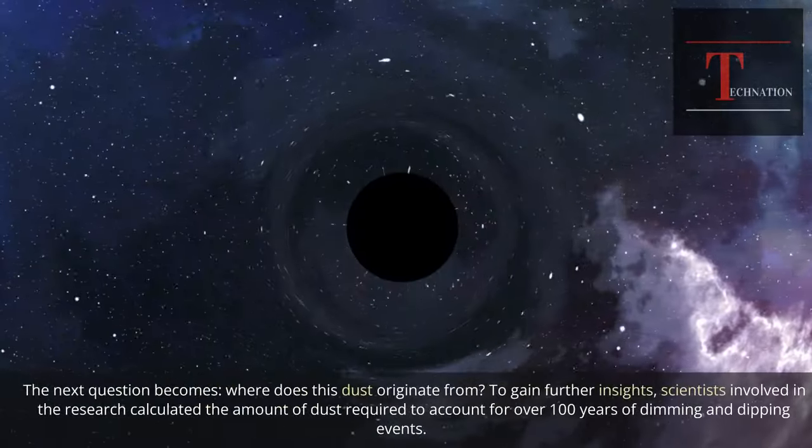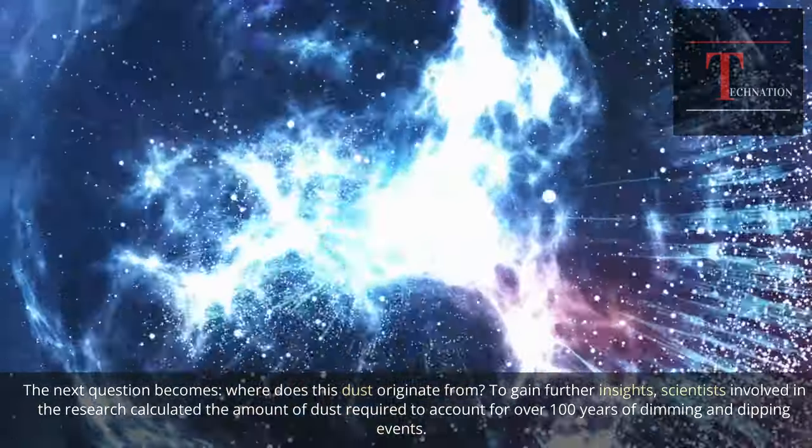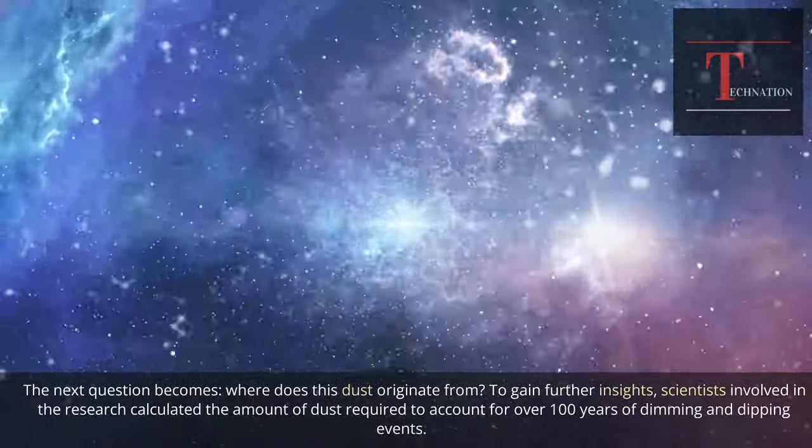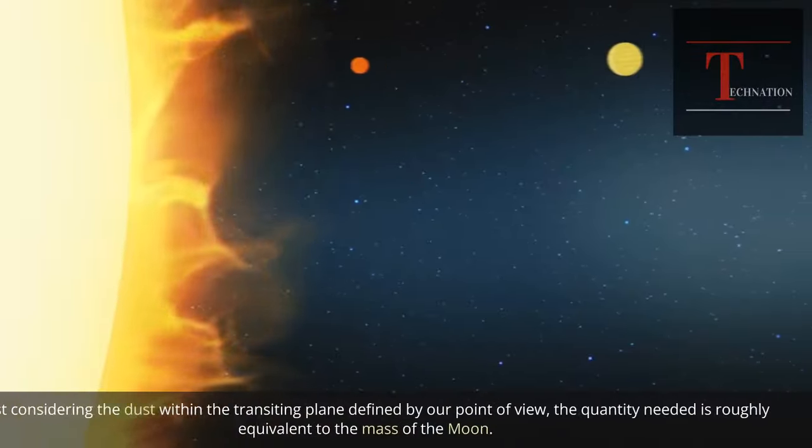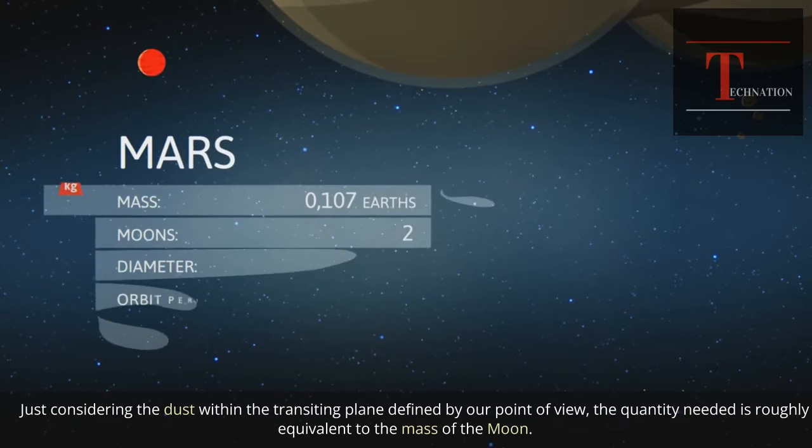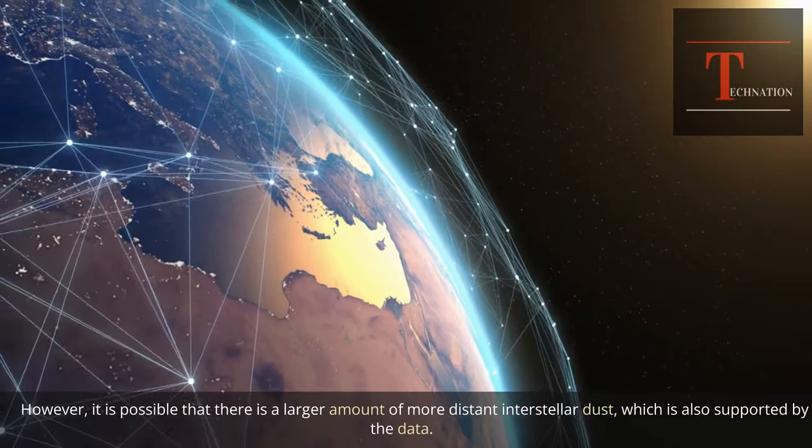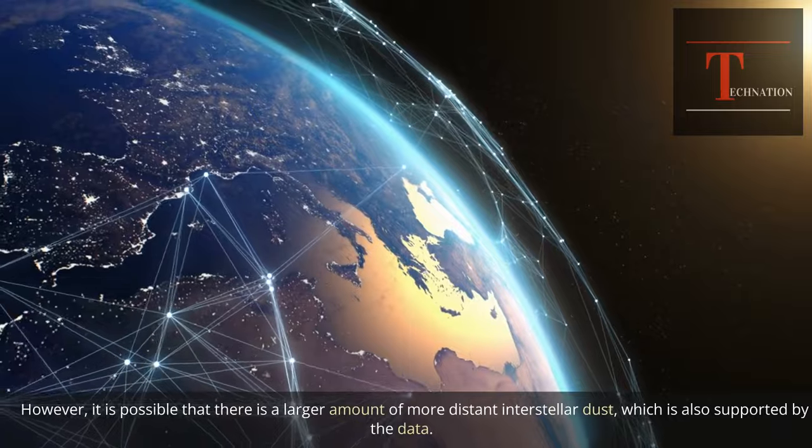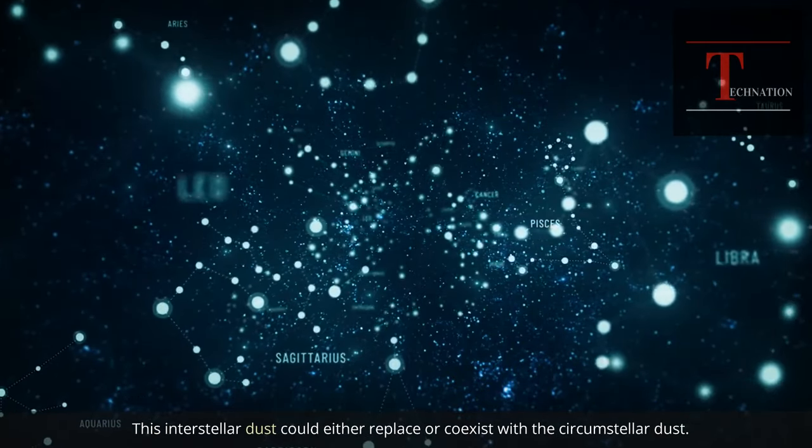The next question becomes, where does this dust originate from? To gain further insights, scientists involved in the research calculated the amount of dust required to account for over 100 years of dimming and dipping events. Just considering the dust within the transiting plane defined by our point of view, the quantity needed is roughly equivalent to the mass of the moon. However, it is possible that there is a larger amount of more distant interstellar dust, which is also supported by the data. This interstellar dust could either replace or coexist with the circumstellar dust.